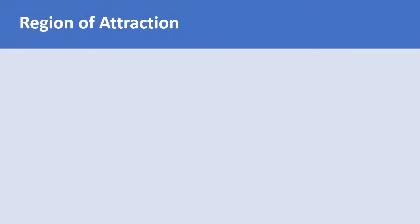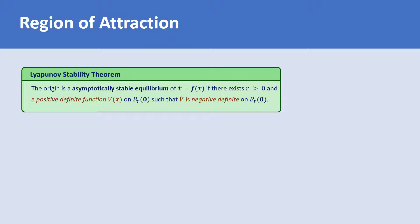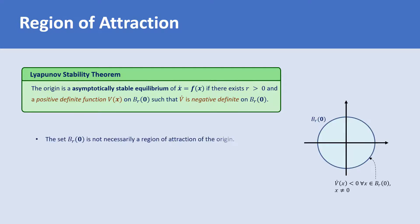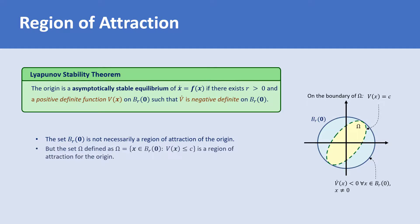Let's go back to the Lyapunov stability theorem. The theorem says that the origin is asymptotically stable if there exists a ball around the origin and a positive definite function v on the ball such that v-dot is negative definite on it. We saw in the example that the set B_r(0) is not necessarily a region of attraction of the origin. But we can find the region of attraction using the Lyapunov function v. It's enough to choose a compact set that is fully within the ball B_r(0) and is obtained by the level curves of the Lyapunov function v. This set is defined as all x in B_r(0) such that v(x) is less than or equal to c, where the constant c is chosen such that omega is a subset of B_r(0).